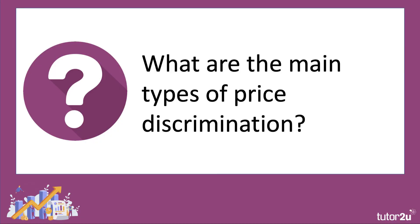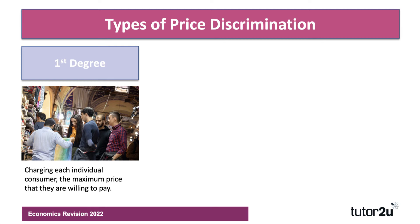Now, there are three main types of price discrimination that most students for most exam boards need to cover. The first is first degree discrimination — that basically involves a negotiation or haggling process between buyer and seller. The seller's aim is to charge each individual consumer the maximum price they're willing and able to pay. The picture here is of a tourist bazaar — a haggling process where the seller is trying to tease out of the consumer what they're willing and able to pay, and of course that will vary from person to person.